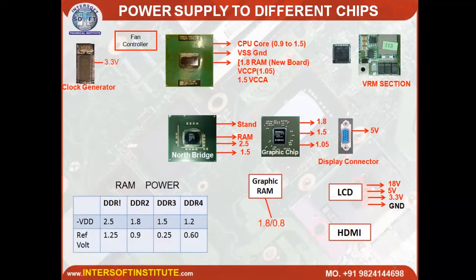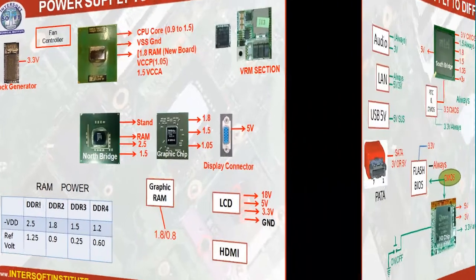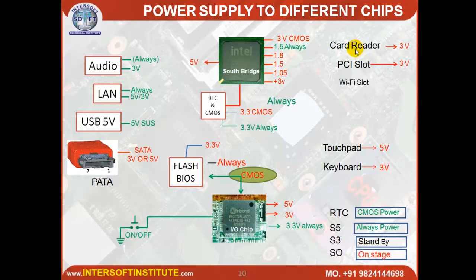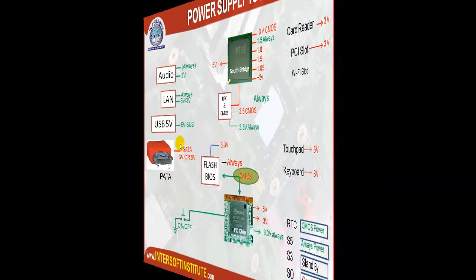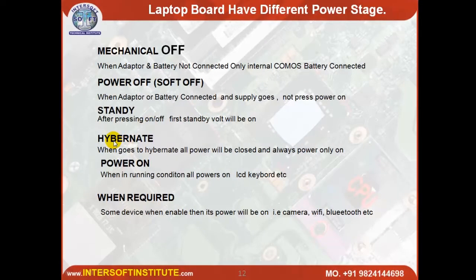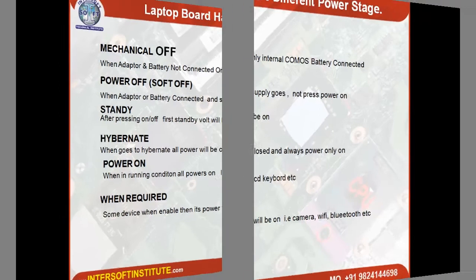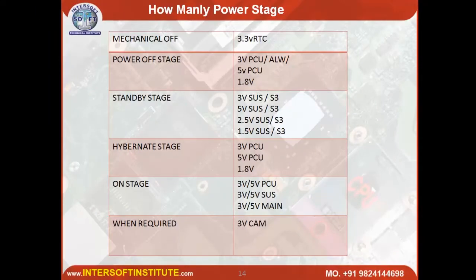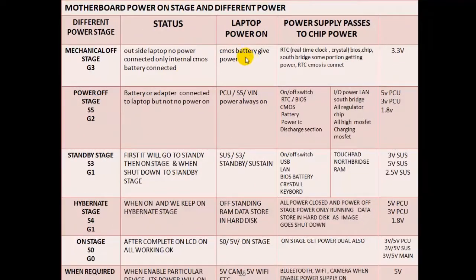In new motherboards, the CPU is also connected with RAM, and in some motherboards the CPU also controls the graphics ICs. The south bridge is connected with the card reader, which also requires voltage. Components require different voltages: PCI slot 3V, Wi-Fi slot 3V, touchpad 5V, keyboard 3V. Hibernate works like standby but shuts down the laptop and stores all data on the hard disk as a file. In standby stage, voltages of 3V, 5V, 2.5V, and 1.5V are present (referred to as SUS or S3). The CMOS battery provides power to the RTC real-time clock, BIOS chip, and south bridge portions.